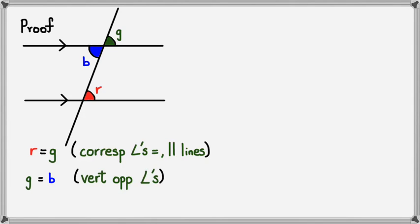Now if angle R equals G and angle G equals B, then we can clearly say that the red angle is actually the same as the blue angle. So we can say R equals B, and that's because alternate angles are equal when it's in parallel lines. That's what this reason would be. Okay, let's have a look at an example.